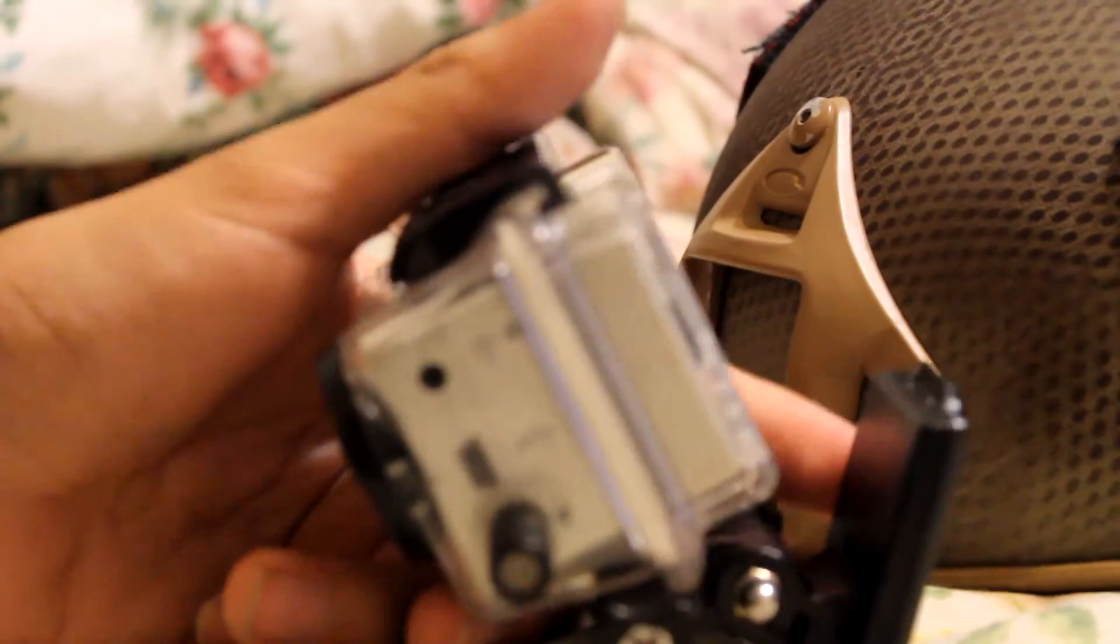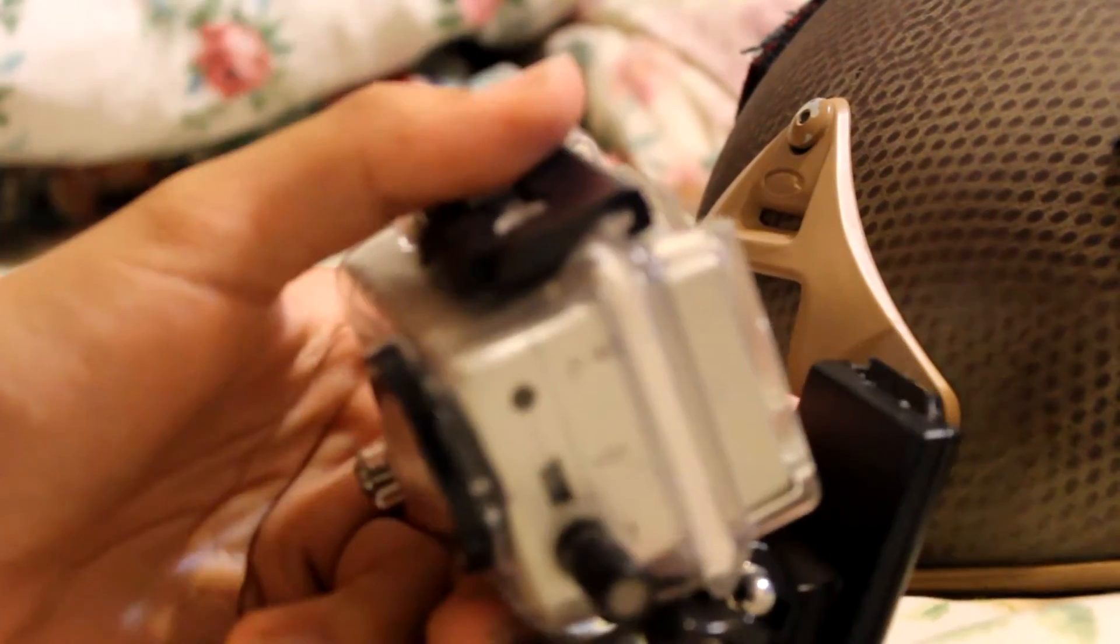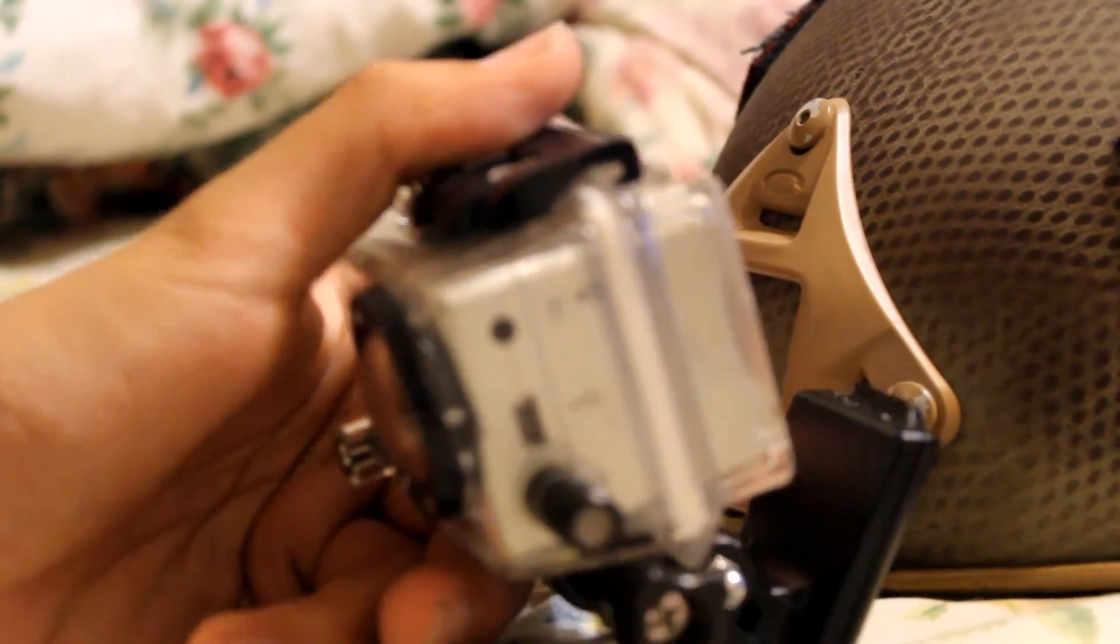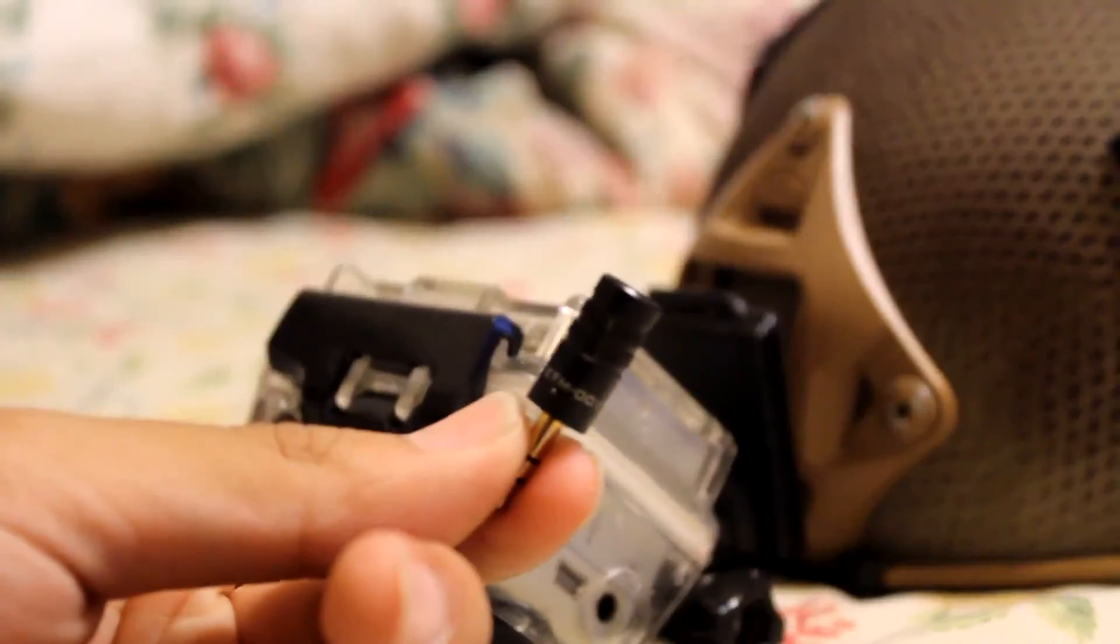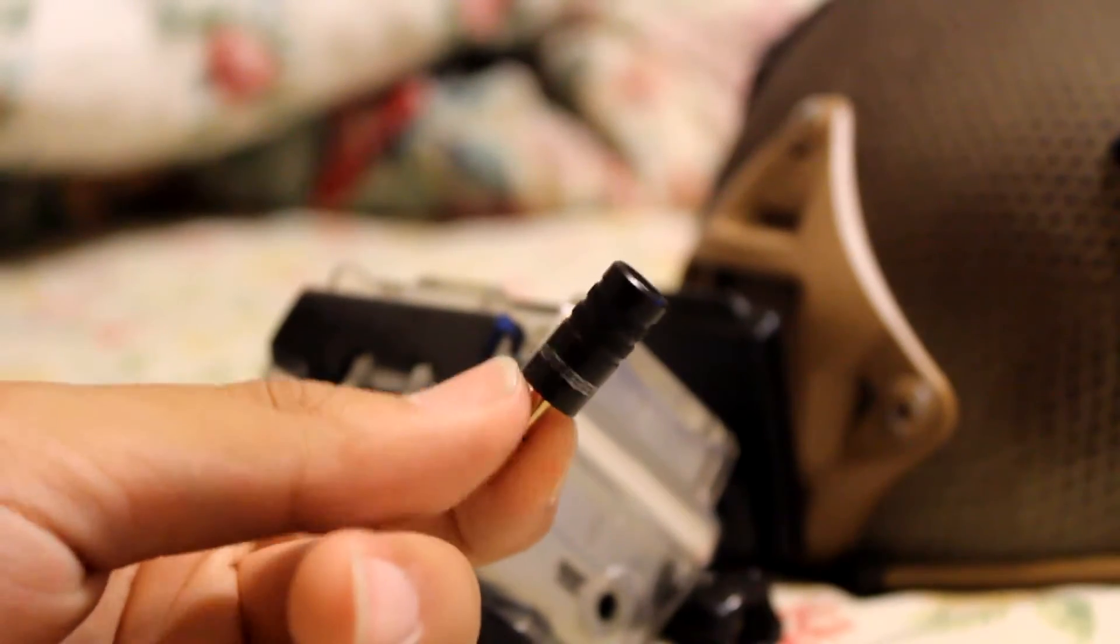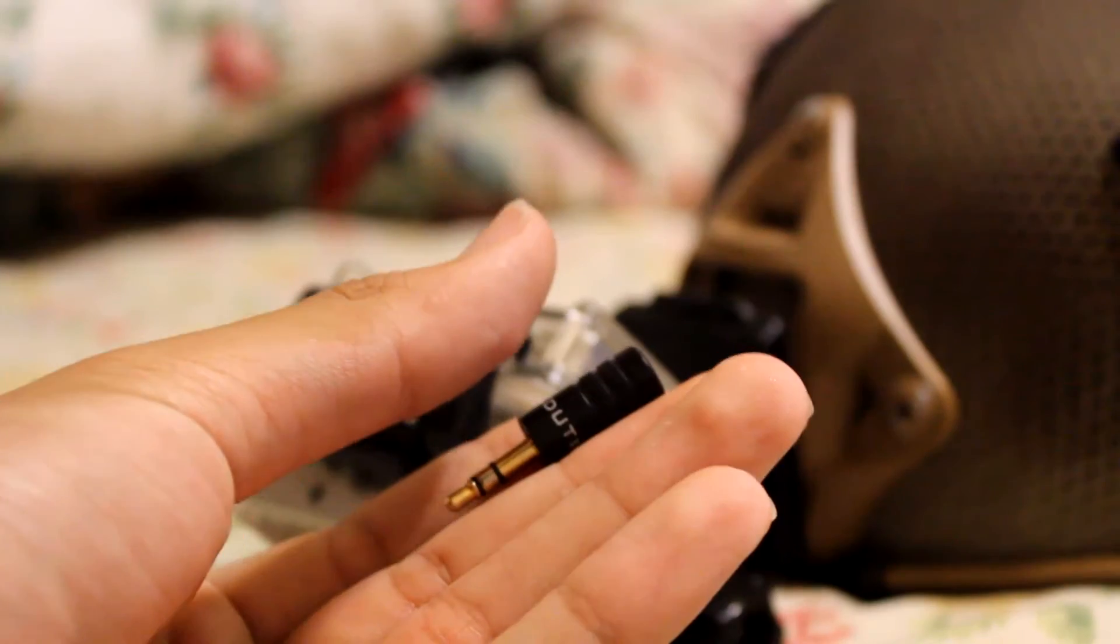It's an Edutige and its model number is the ETM-001. This is all it is, I don't know if you guys can see that. It's about a $40 mic. It's about the length of my thumb, like half my thumb.